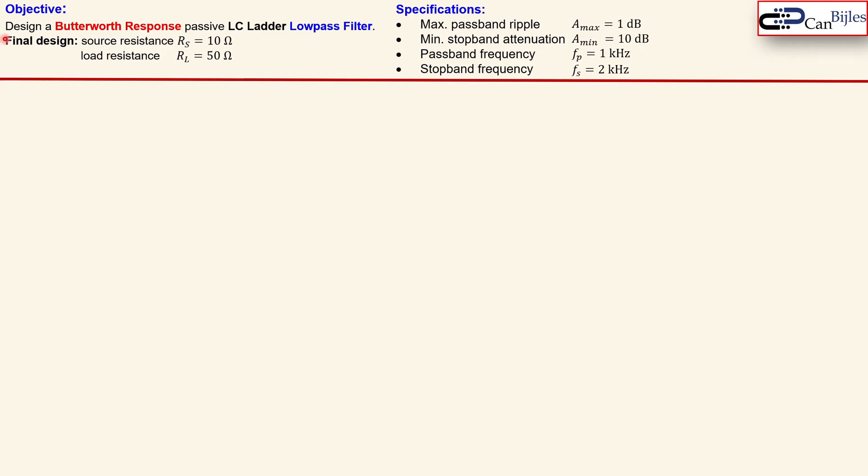We have now a design objective. We'd like to design a Butterworth response passive LC ladder filter, lowpass configuration, and we need to have in our final design a load resistor of 50 ohms and a source resistor of 10 ohms. So this is different - you can see that it is not matched.